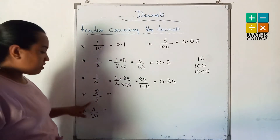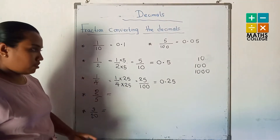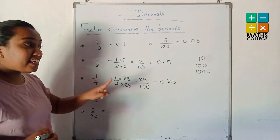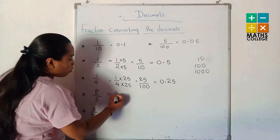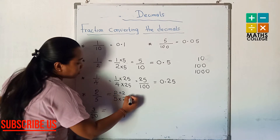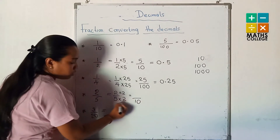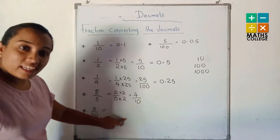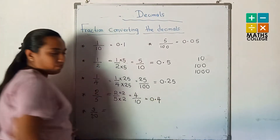Third example: 2 over 5. What is the easy conversion? Can 10 be divided by 5? Yes — 10 divided by 5 is 2. Therefore 2 over 5 multiplied by 2 over 2 gives 4 over 10. The denominator 5 is converted easily to 10. Then it can be written as the decimal 0.4.